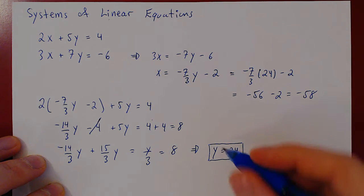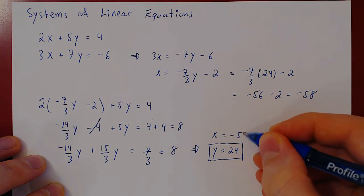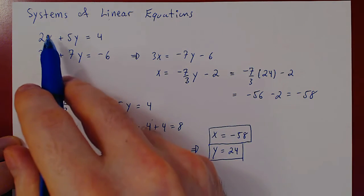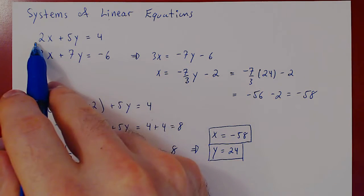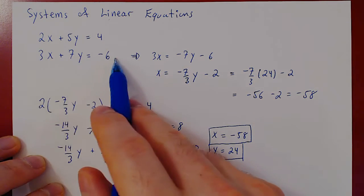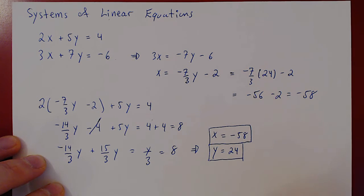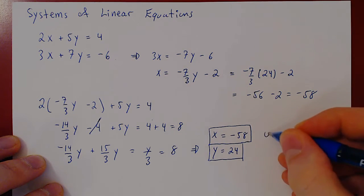And so we have now our unique solution. The only way to find a value of x and y that satisfy both the first and the second equation is for x to be negative 58 and for y to be positive 24. So here we have a unique solution.